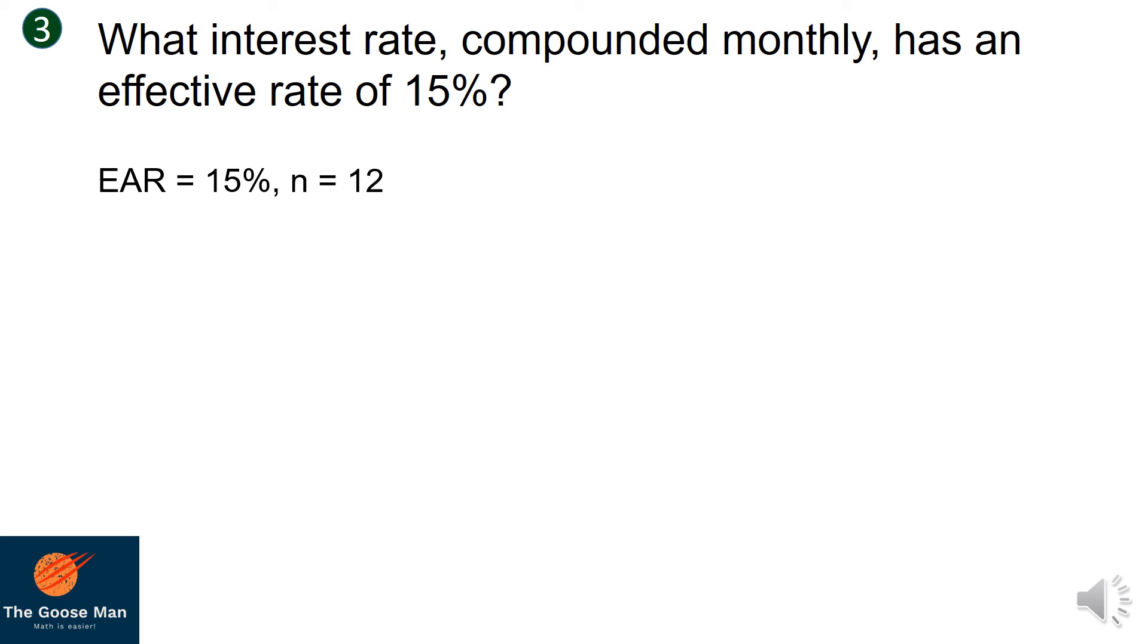Based on our formula, the effective annual rate equals (1 + r/n)^n - 1. I'll substitute the given values: 15% = (1 + r/12)^12 - 1. Take note that r is your nominal rate. If I manipulate this, I'll come up with the nominal rate equals the frequency times the expression (1 + EAR)^(1/n) - 1.